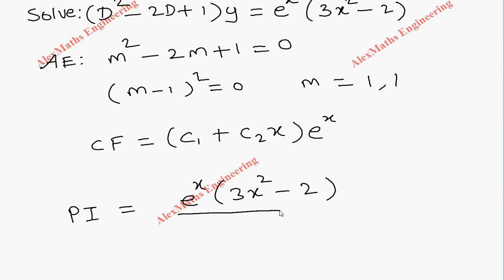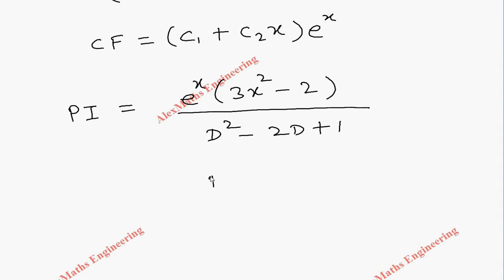Now as per the procedure, every D is replaced as D plus 1. So the value of a here is 1, so numerator we have to write as it is. Then coming to the denominator, D is replaced by D plus 1.